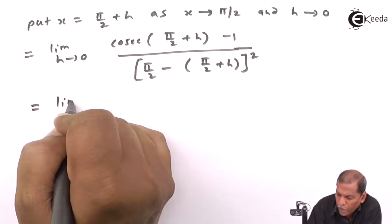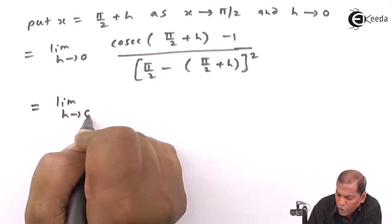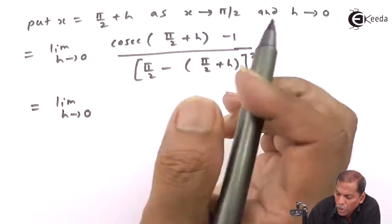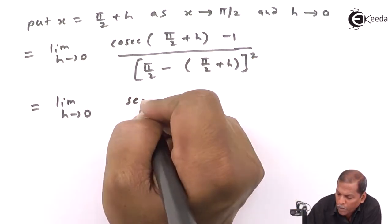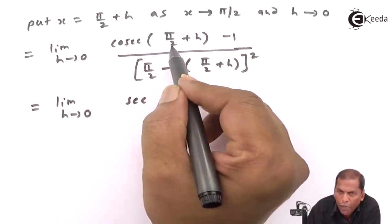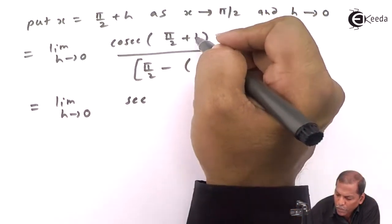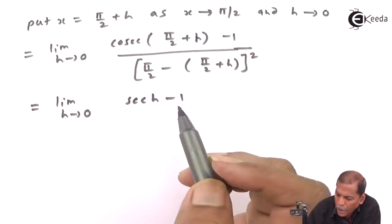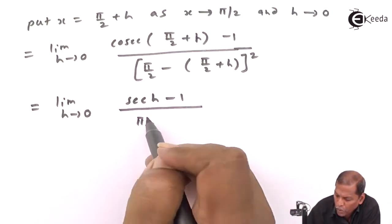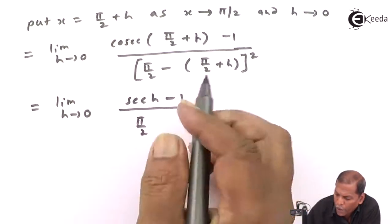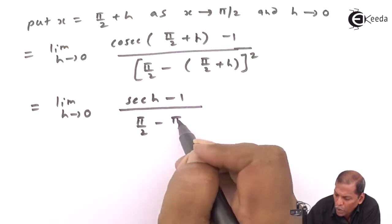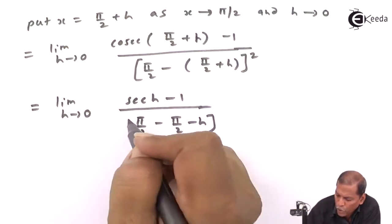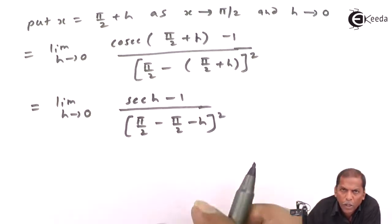Now, using the identity cosec(π/2 + h) = sec h, we get: limit h tends to 0 of sec(h) - 1 upon π/2 - π/2 - h, whole square in the denominator, which simplifies to sec(h) - 1 upon (-h)², that is h² in the denominator.